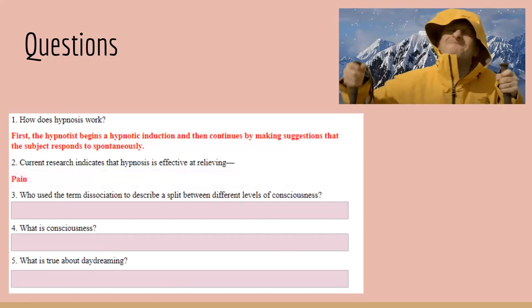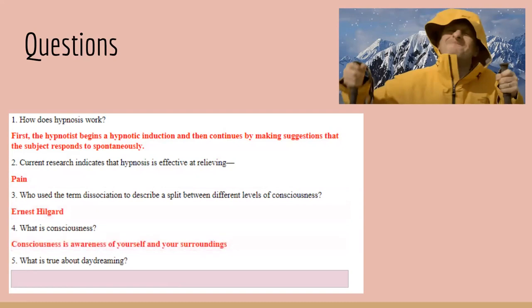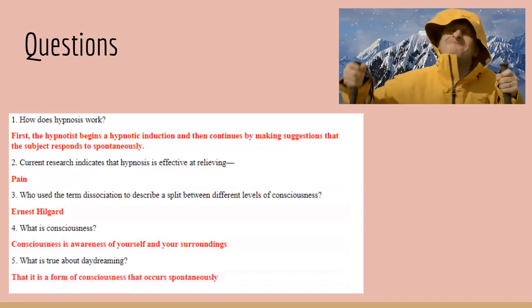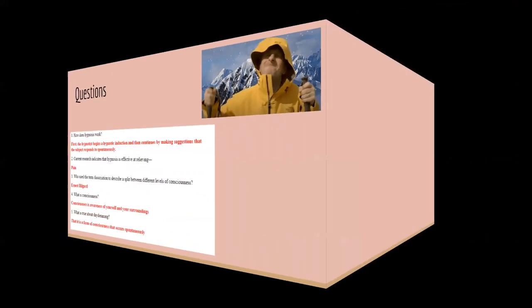Who used the term 'dissociation' to describe a split between levels of consciousness? That was Ernest Hilgard. What is consciousness? It's the awareness of yourself and your surroundings. What is true about daydreaming? It occurs spontaneously and it is a form of consciousness. That's it for this video.